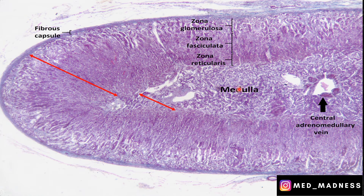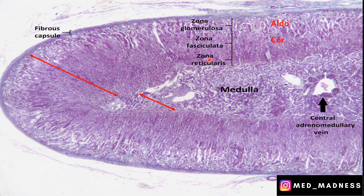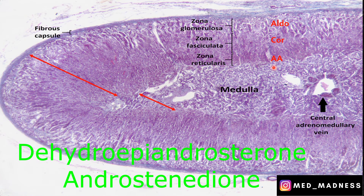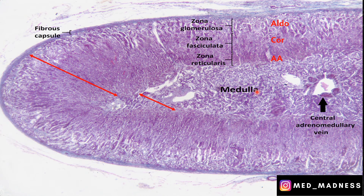The medulla can be clearly differentiated from the cortex by the presence of wide sinusoids. These layers secrete different hormones. The zona glomerulosa secretes mineralocorticoids — aldosterone is a powerful mineralocorticoid that regulates water and electrolyte balance in the body. The fasciculata secretes glucocorticoids, and the powerful glucocorticoid is cortisol, which affects carbohydrate and protein metabolism. The zona reticularis secretes adrenal androgens like DHEA (dehydroepiandrosterone) and androstenedione. The adrenal medulla secretes two important hormones at times of stress: epinephrine and norepinephrine.